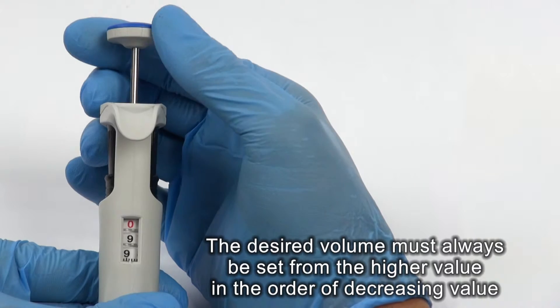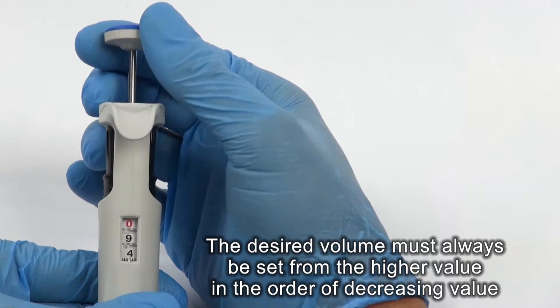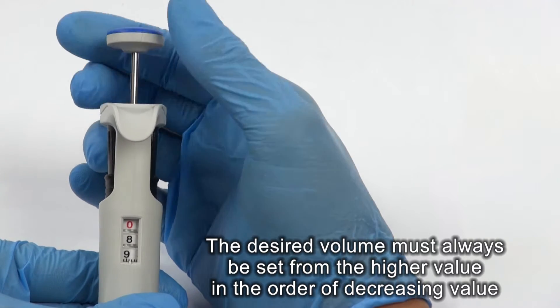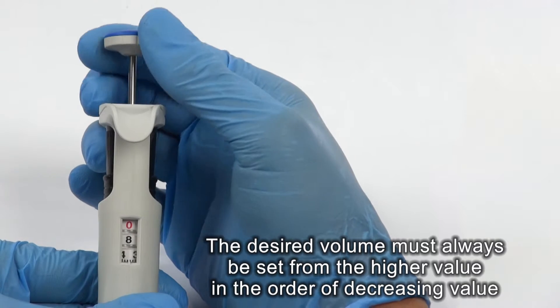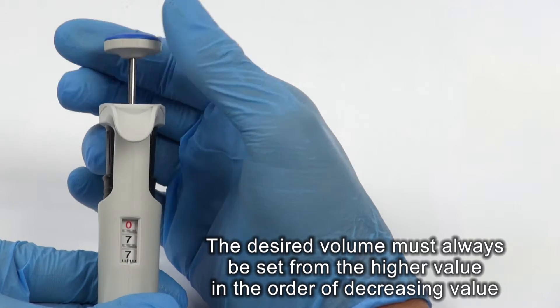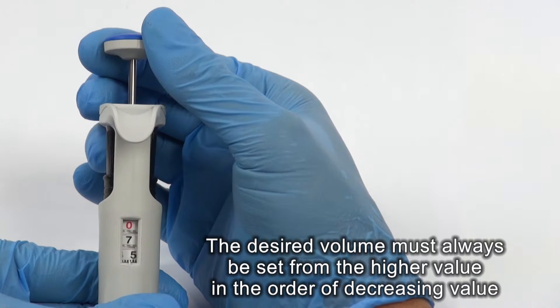If the desired volume is lower than the set volume shown by the counter, turn the counter in the direction that diminishes the counter readings to the required volume. Avoid passing this value.